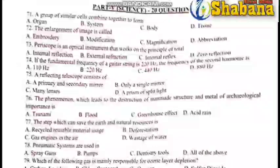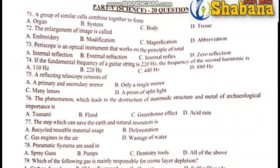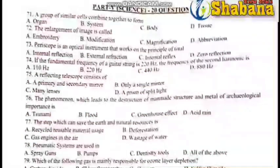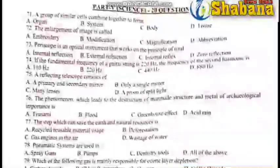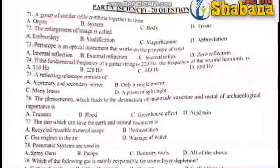The reflecting telescope consists of — question number 75, answer is A. The reflecting telescope consists of lenses or mirrors: a primary mirror and a secondary mirror. The answer is A — primary and secondary mirror. In the mirror telescope, the answer is A.